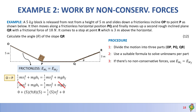Substituting: mass is 5, gravitational acceleration is 9.8, initial height from the ground to point O is 5 meters. This equals half of mass 5 times velocity final squared. The only unknown is velocity final, and using our calculators we find that the final velocity at point P is 9.9 meters per second.